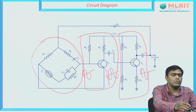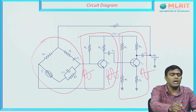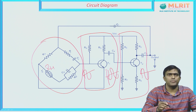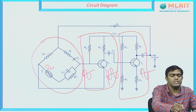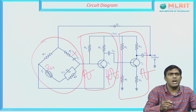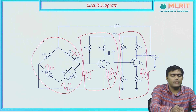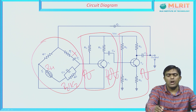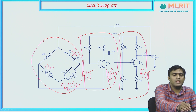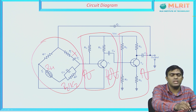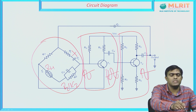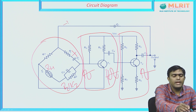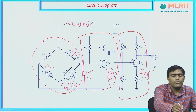The Wien bridge network consists of two arms with resistors R1, R2, R3, and R4, and two capacitors C1 and C2. C1 is in series with resistor R1, and R2 is in parallel with capacitor C2. The output is again fed back to the input of the feedback network — the Wien bridge circuit — which receives feedback from the output. This feedback is negative feedback.